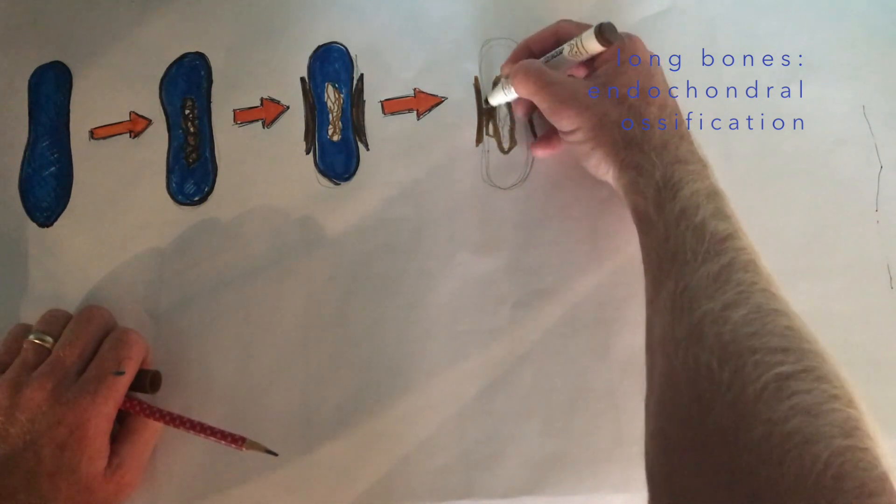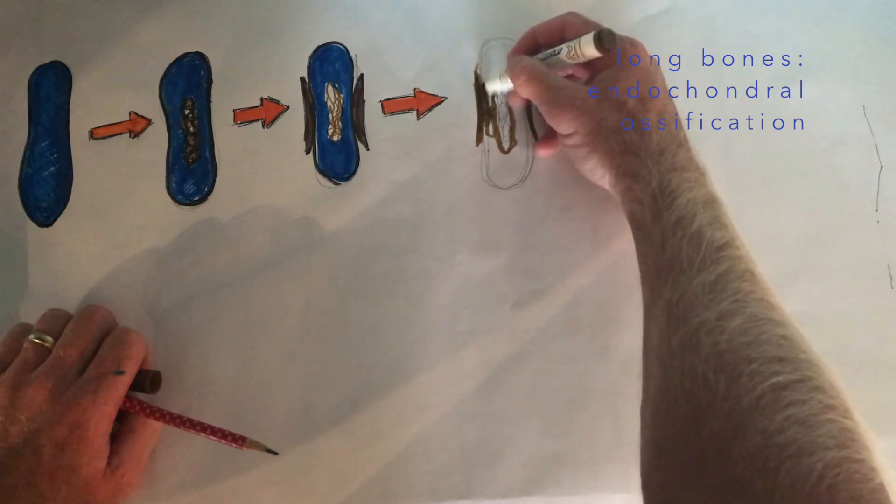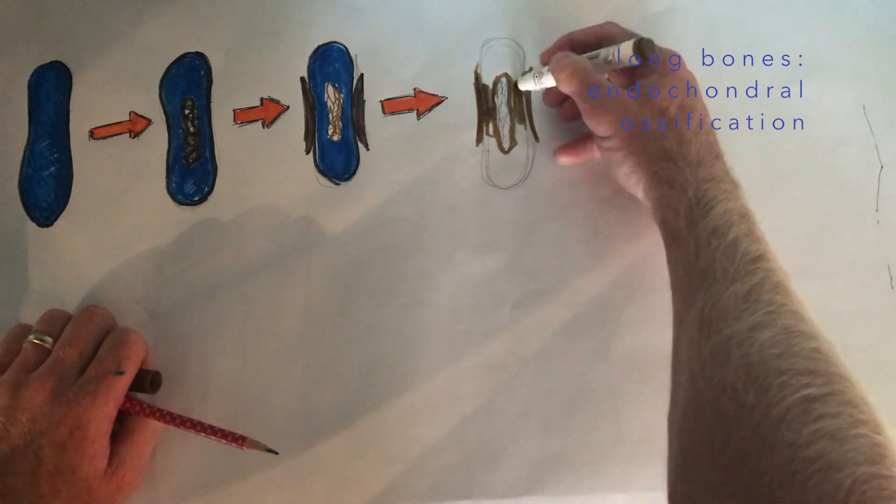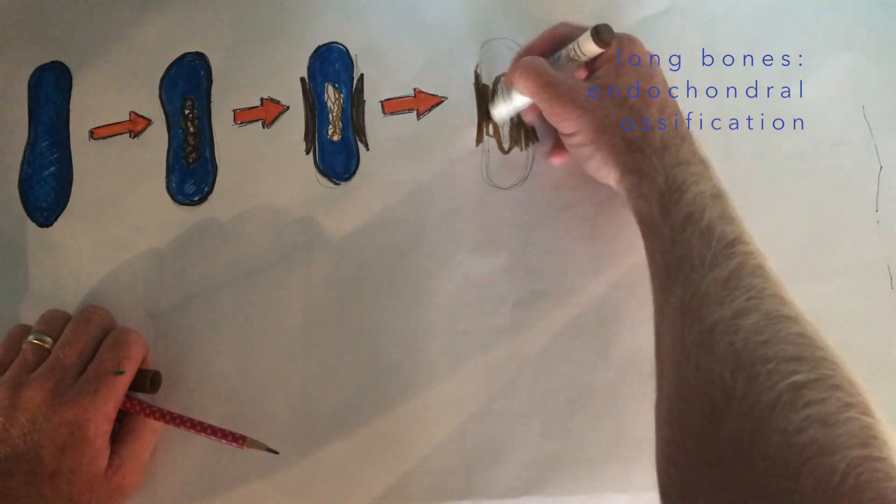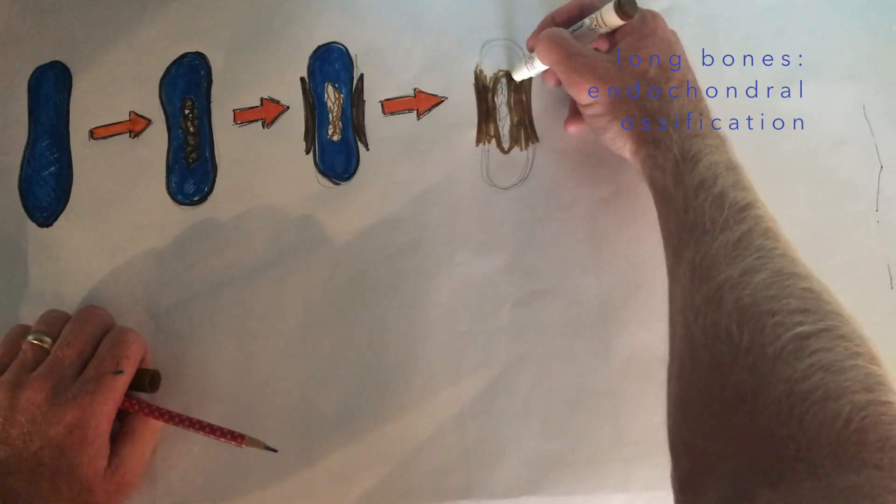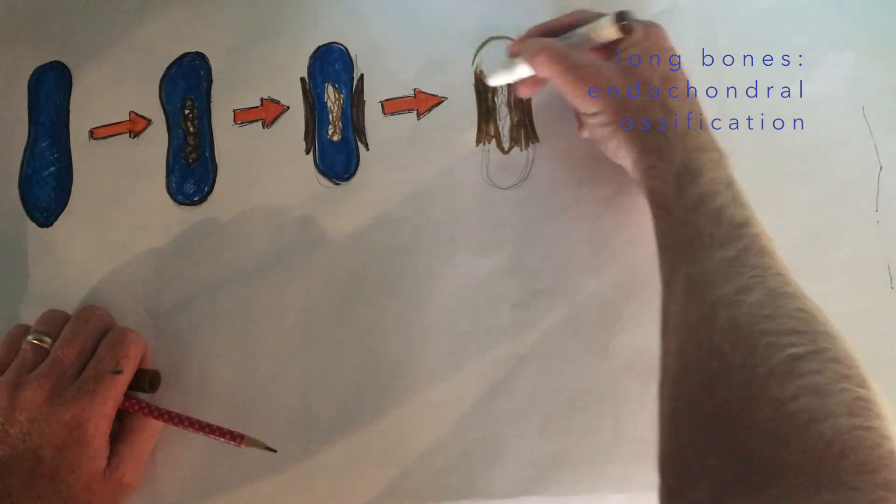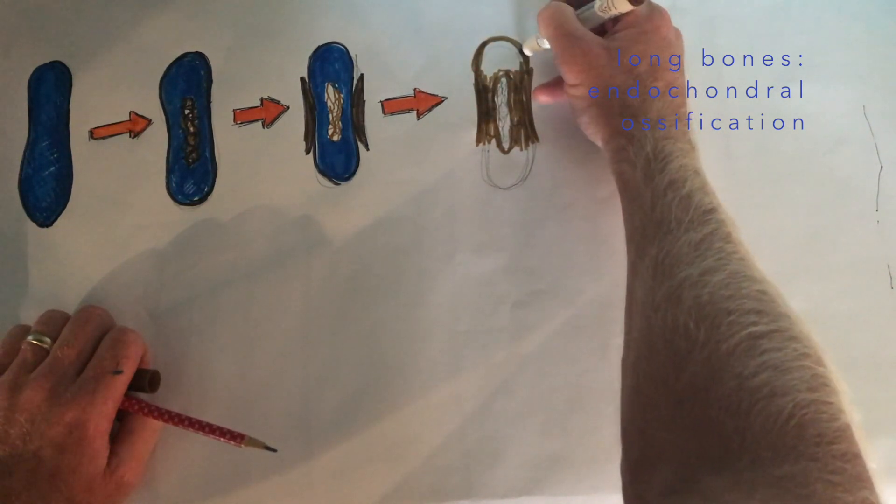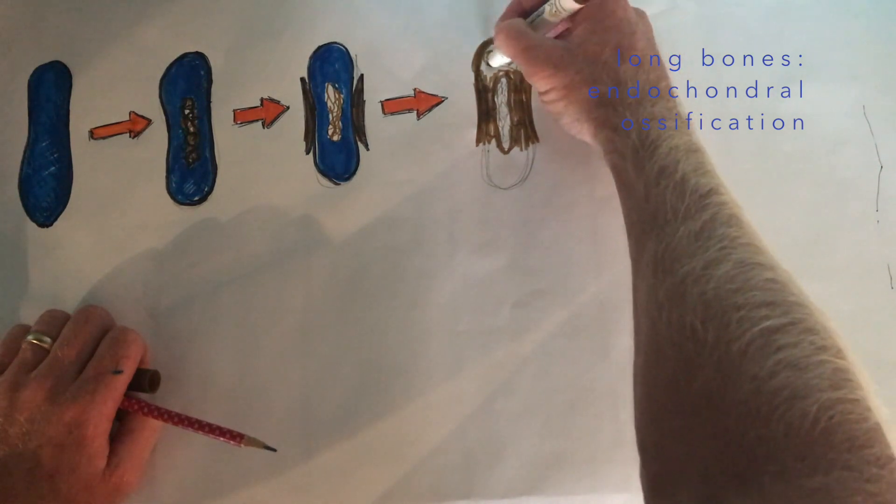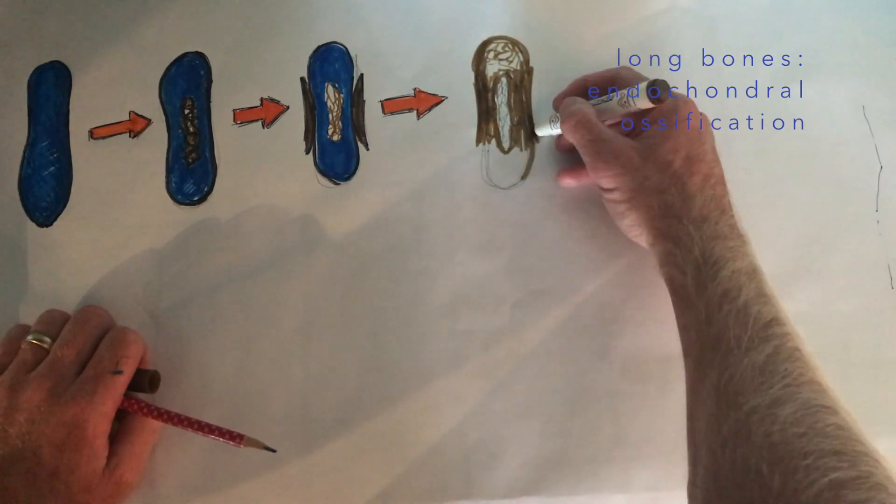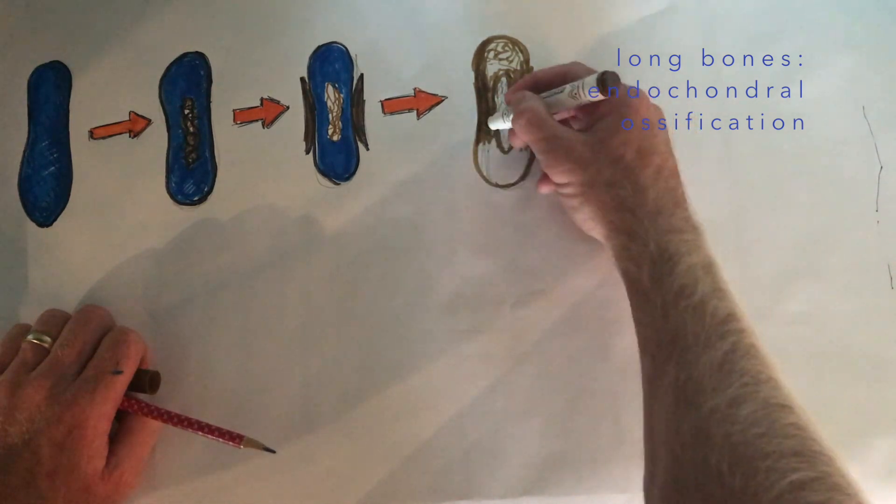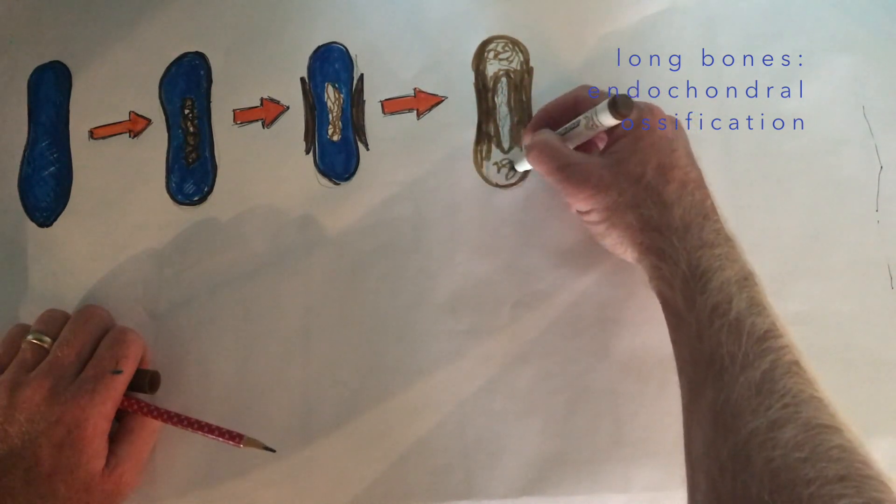The secondary ossification centers are going to occur in the epiphysis. This occurs later in development, typically after birth, and this is the start of the epiphyseal plate which is responsible for longitudinal growth in bone. This epiphyseal plate is going to continue to produce new bone tissue that allows the bone to grow in length.